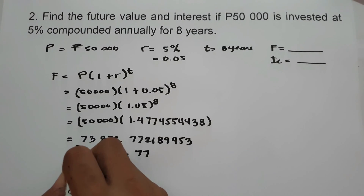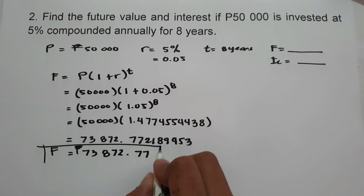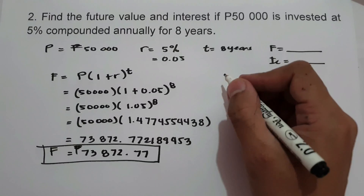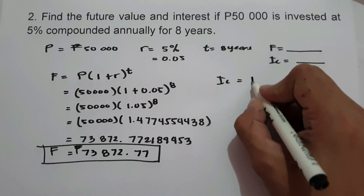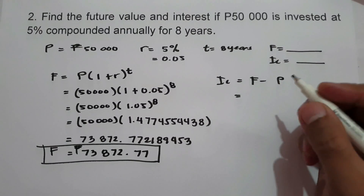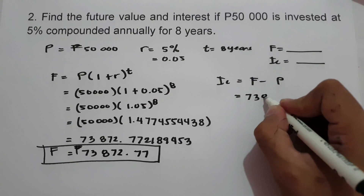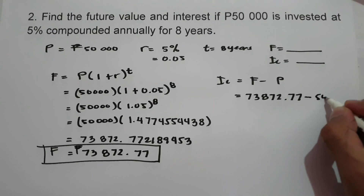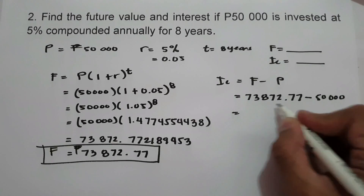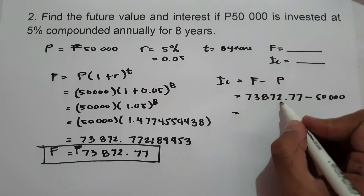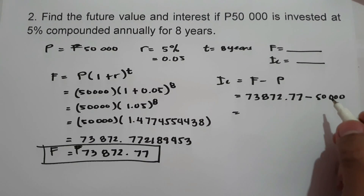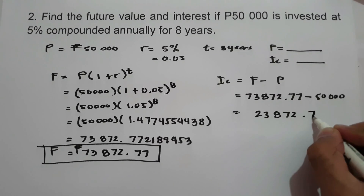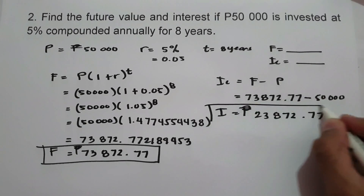So this will be our future value. To find the compound interest, we use the formula: compound interest equals future value minus principal. Our future value is 73,872.77 minus principal which is 50,000. So we have 73,872.77 minus 50,000, which gives us 23,872.77 as our interest. So this will be our answer.